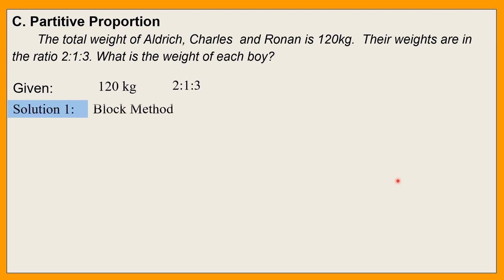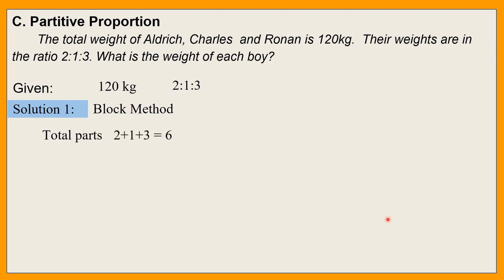Solution 1: gamit tayo ng block method — gamit tayo ng squares or rectangles. Bibilangin natin ilang parts meron. The total parts ay 2 plus 1 plus 3, and that is 6 parts. Kasi 2 parts ang kay Aldrich, 1 part kay Charles, and 3 parts kay Ronan — total of 6 parts.